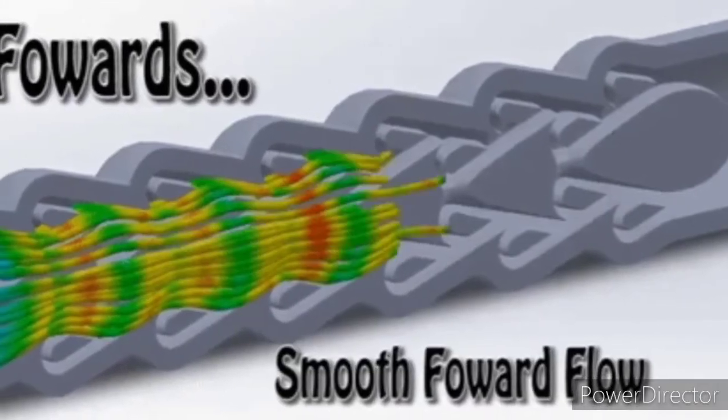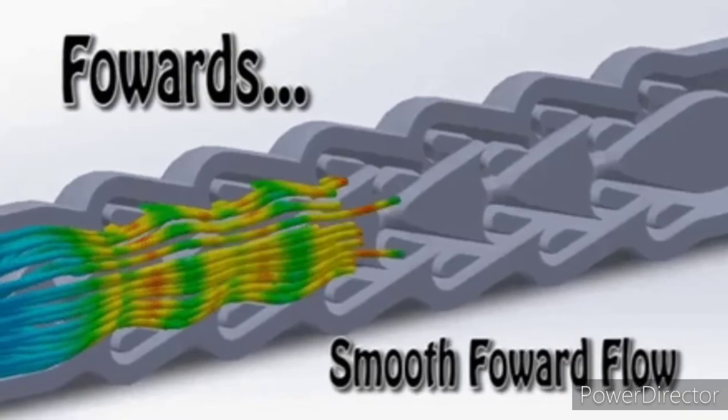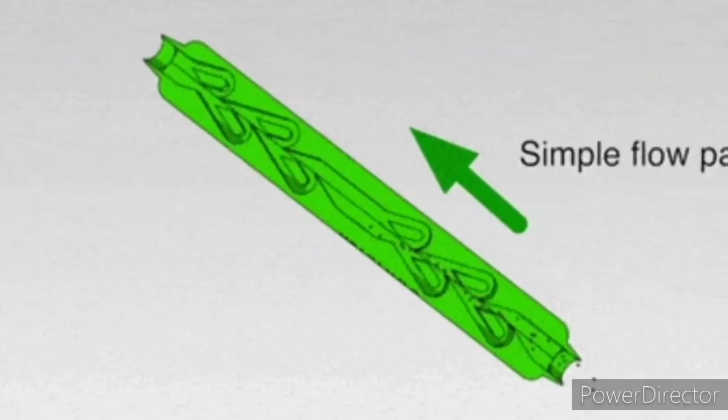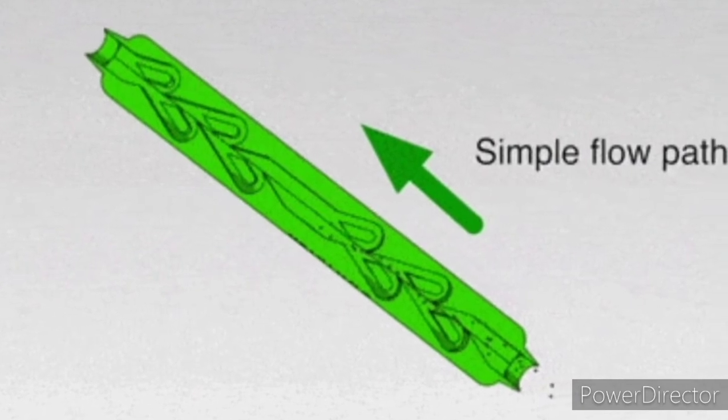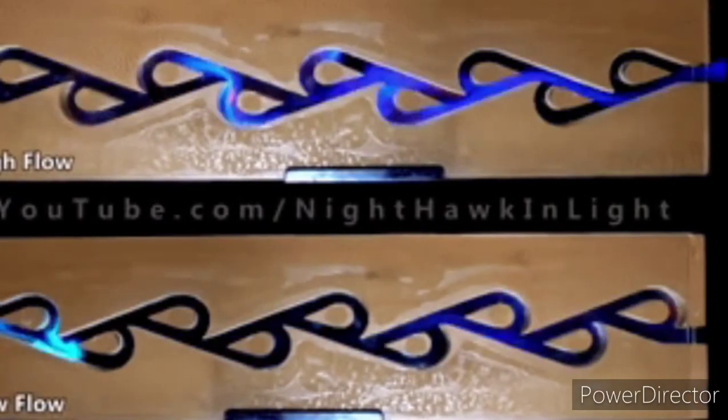Tesla valve is a no moving parts valve. It has many advantages over conventional check valves at micro scale. However, there has been very few literatures discussing its optimization. We present a comprehensive method to optimize the valve complete design.